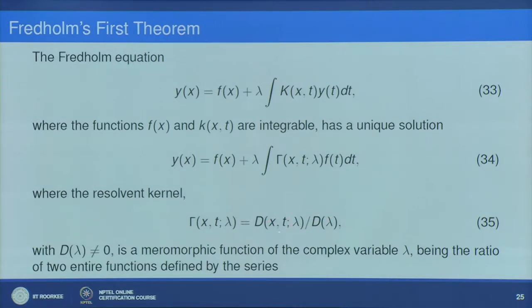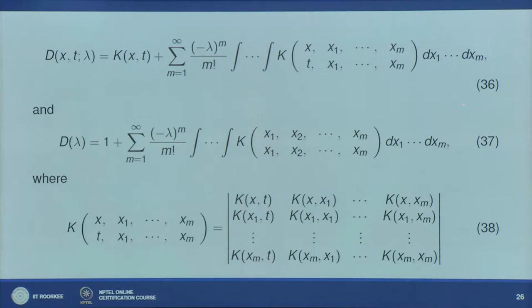Here D(λ) is the Fredholm determinant and D(x,t,λ) is the Fredholm minor corresponding to D(λ). Both D(x,t,λ) and D(λ) are entire functions, and γ(x,t,λ) is a meromorphic function of the complex variable λ. D(x,t,λ) and D(λ) are defined by the following infinite series, where the symbol K(x₁,...,xₘ; x₁,...,xₘ) is defined by equation number 38.